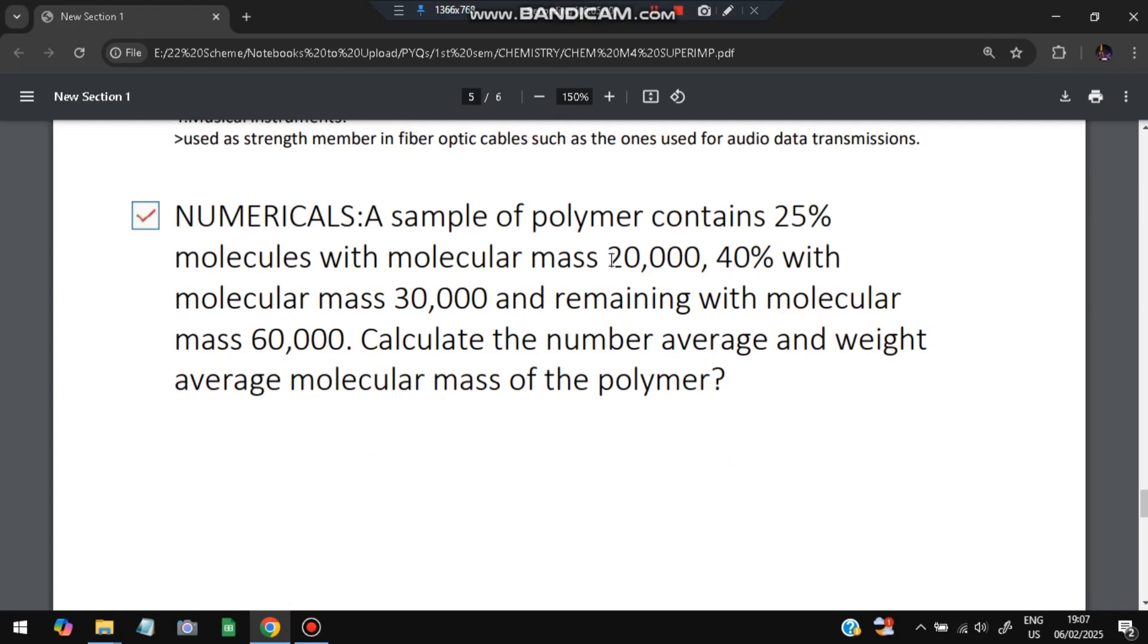Next we can have a look at the numerical which can be asked from module 4. A sample of polymer contains 25 percent molecules with molecular mass of 20,000. So percentage and mass is given, this is n1, this is m1, this is n2, this is m2, this is n3, this is m3. Calculate the number average and weight average molecular mass of the polymer.